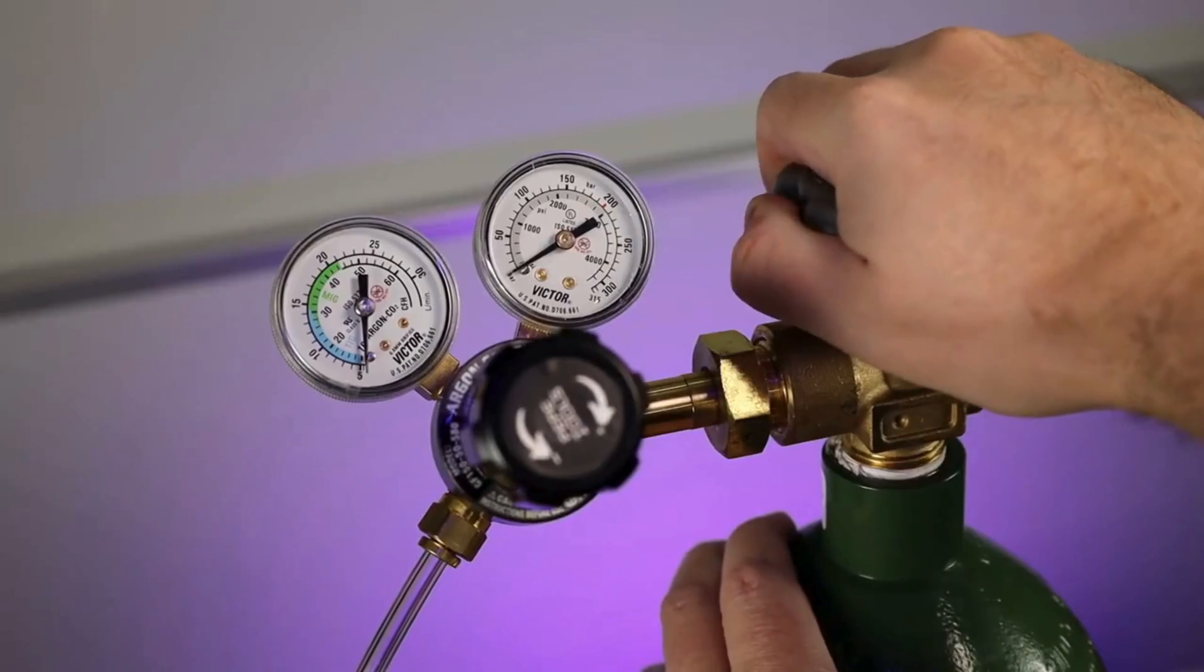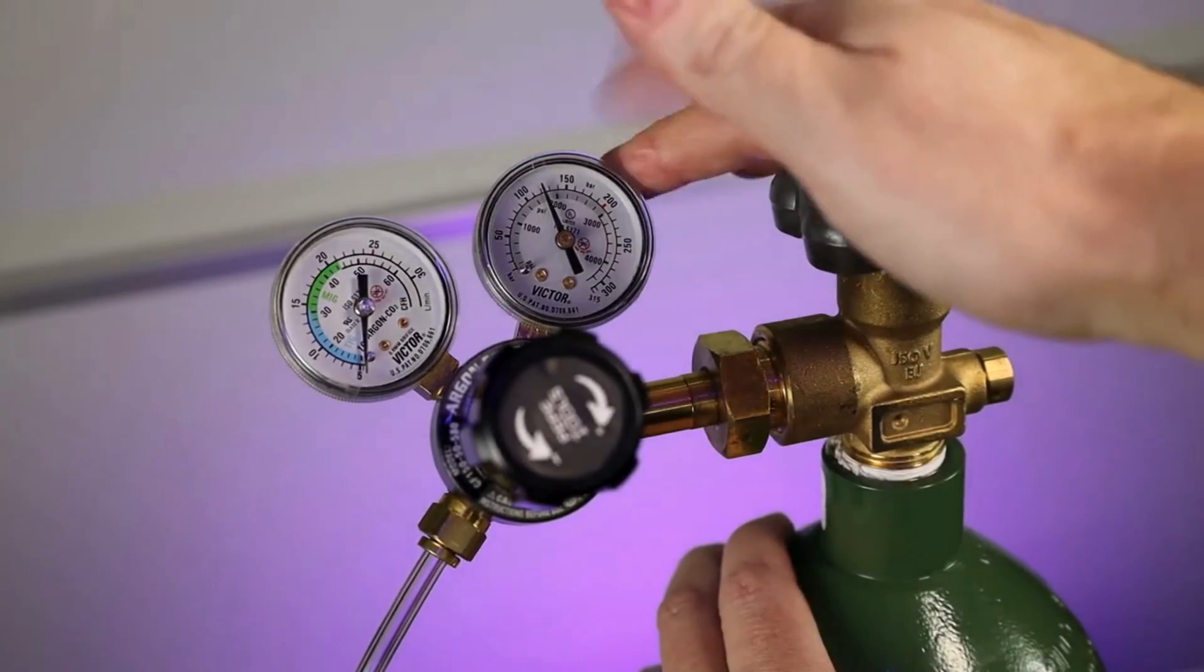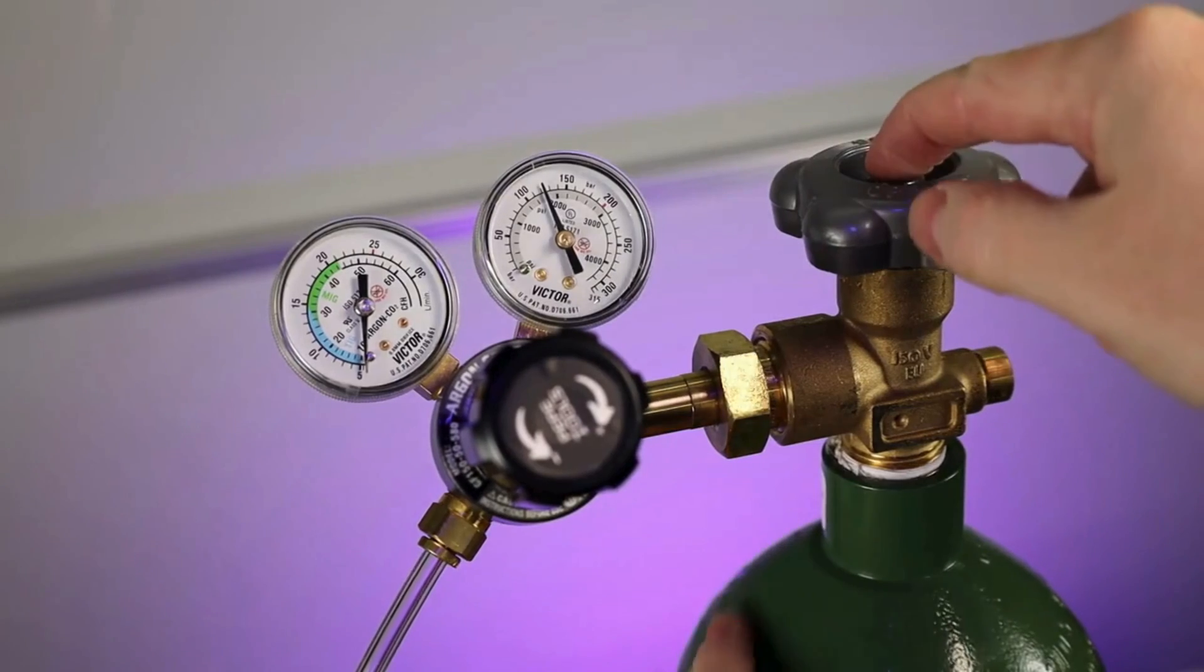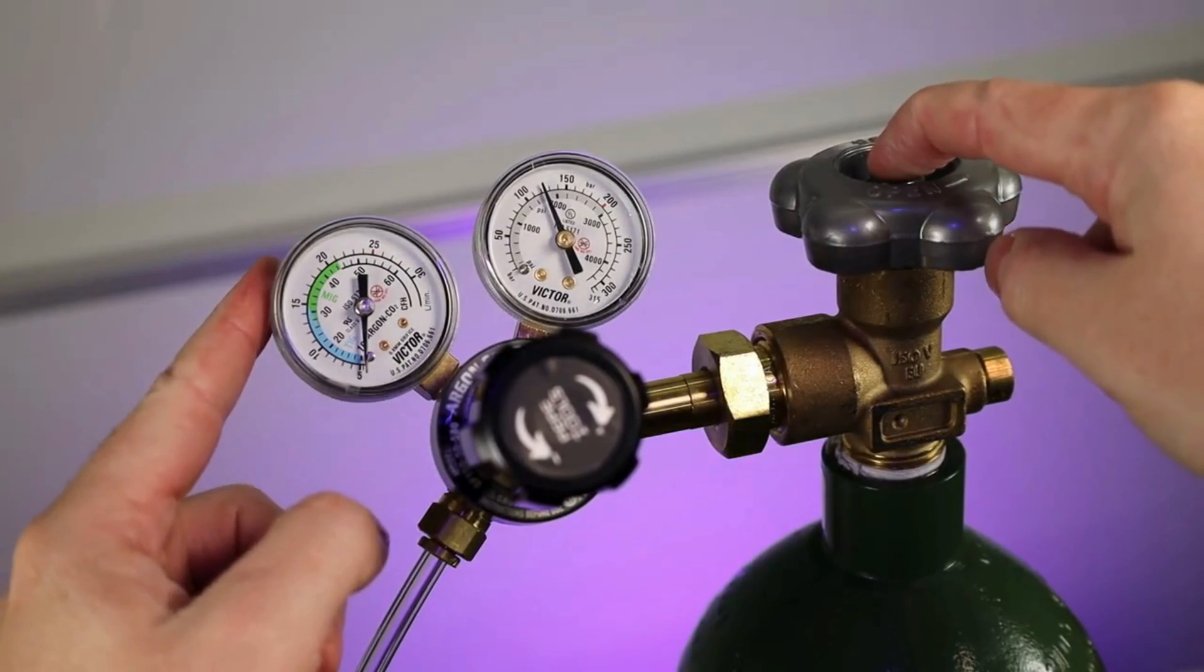With all that done, we can finally open up the canister itself. As I'm doing this, you can see that one of the gauges starts moving. This is telling you the pressure of the canister. This other gauge is how much pressure you're letting out through the regulator.